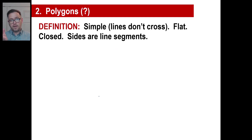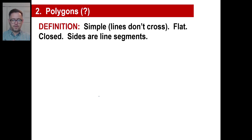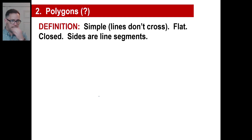A polygon — a real simple definition. The lines do not cross. They're simple figures. They're flat and closed, and their sides are line segments — not curved. The vertices touch and stop at each other; the lines don't cross. A polygon is defined as a many-sided figure.